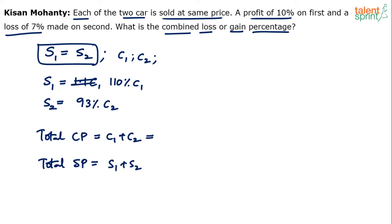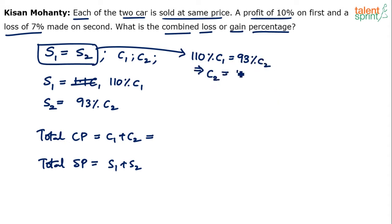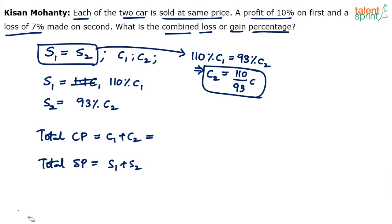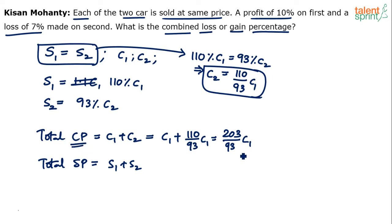Since S1 equals S2, we can say 110% of C1 equals 93% of C2. From this, C2 equals (110/93) times C1. So C1 plus C2 equals C1 plus (110/93)C1, which is (203/93)C1. The total cost price is (203/93)C1.